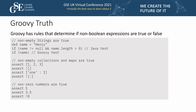Groovy truth allows non-Boolean expressions to be evaluated as true or false. Instead of checking 'name != null && name.length() > 0', you can just say 'if (name)'. Same with collections — non-empty collections and maps are true. With numbers, similar to C, non-zero numbers assert as true.